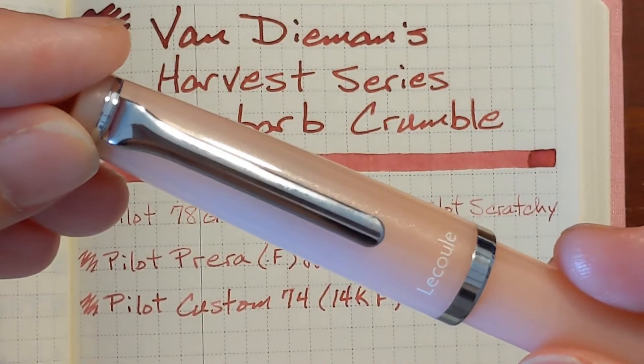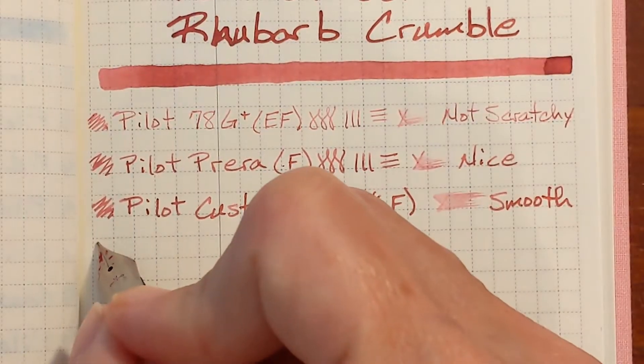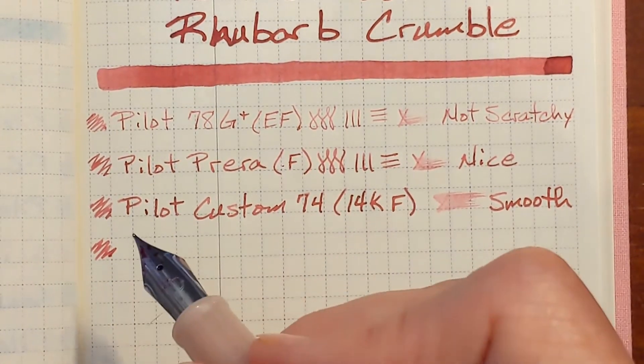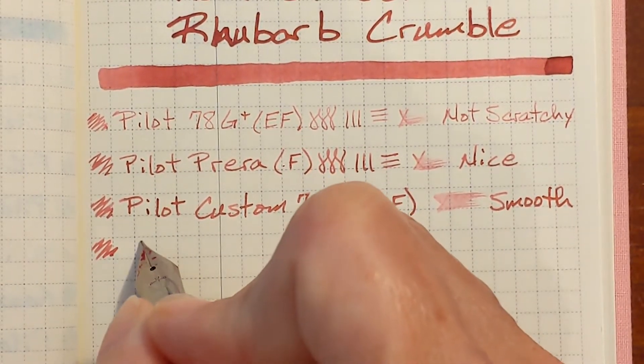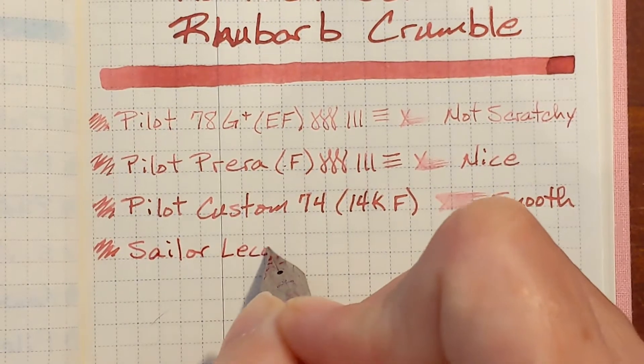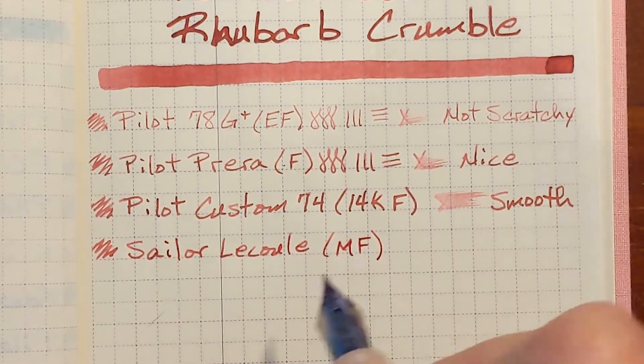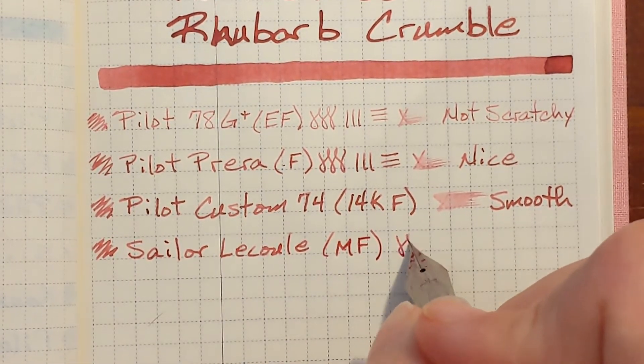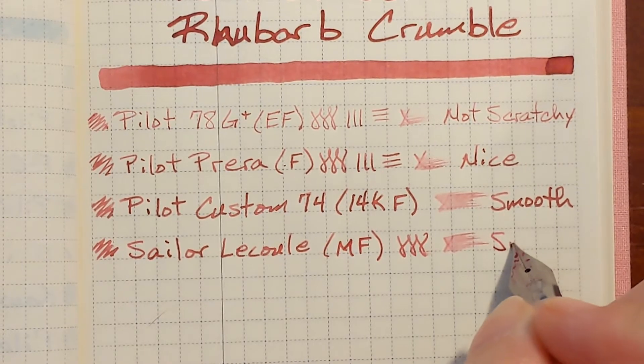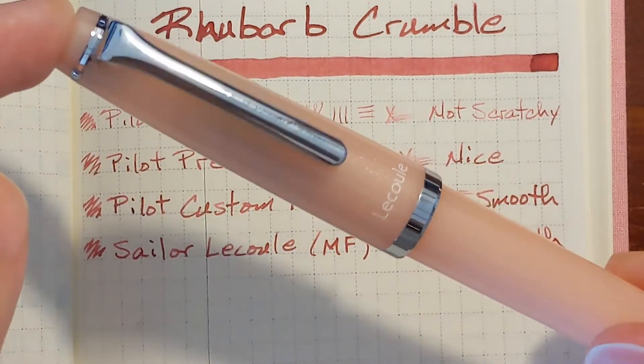Next is my Sailor Lacool with a medium fine stainless steel nib. I was concerned about this pen. Sometimes this pen is a hit and miss on Tomoe River paper. But first impressions are good. I think I like it. I like the line that it's putting down. It feels smooth which like I said is sometimes hit and miss with this pen. And this particular color looks good with this finish.